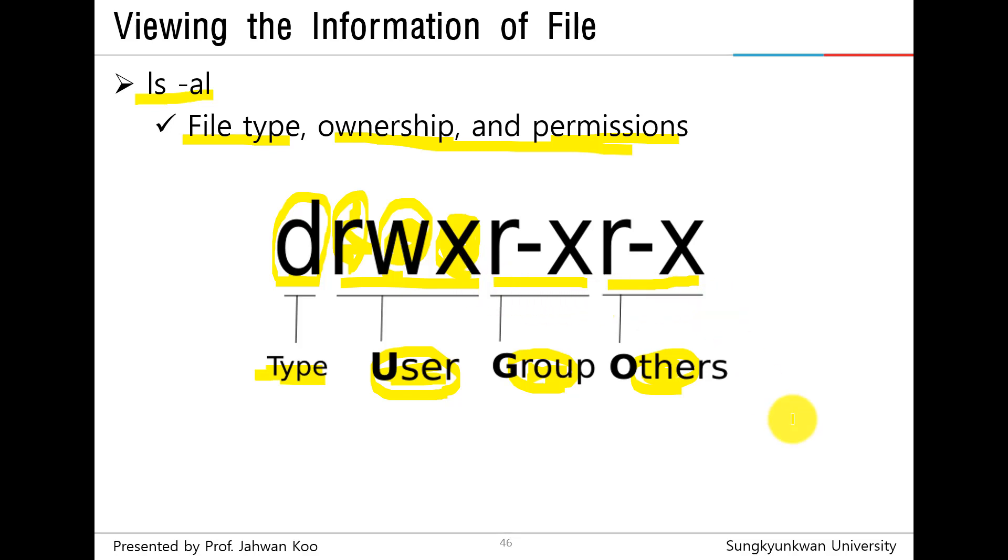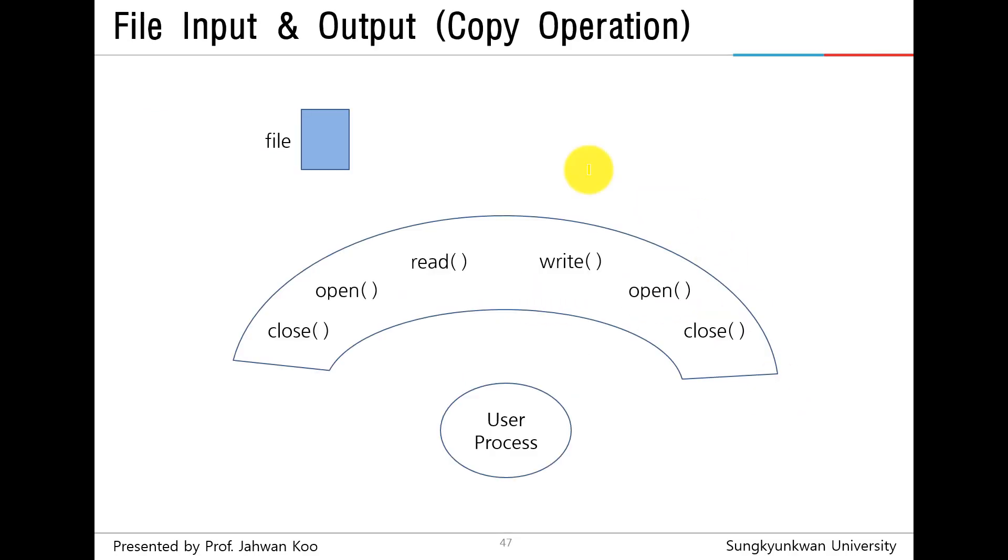Let's see the concept of file input and output. This is user process or program. And this is system calls. And that is file. As you can see, there are several system calls for file input and output: open function, read function, write function, and close function.